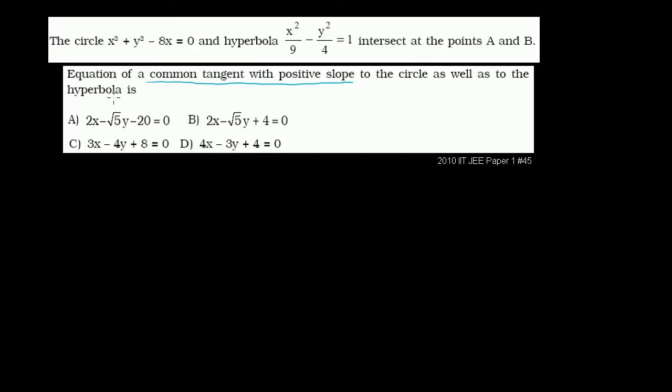Let's visualize what they're asking first — this is going to take us multiple videos. So this circle, let me complete the square in terms of x. The circle as written is x squared minus 8x, plus y squared, equals 0.